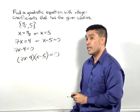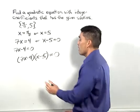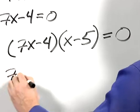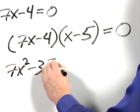And now let's take this left-hand side of the equation and apply the distributive property and multiply it out. 7x times x is 7x squared. 7x times negative 5 is negative 35x.